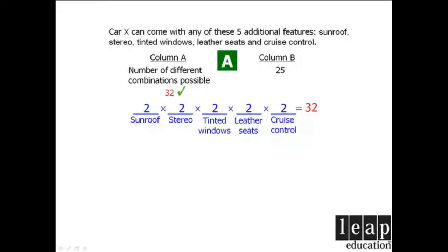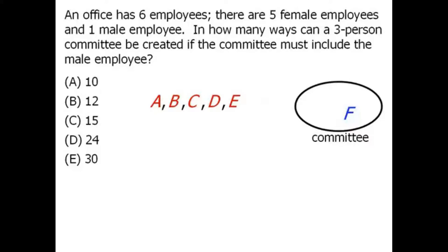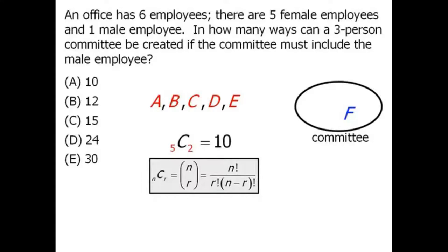We have 5 female employees and 1 male employee, and our goal is to create a 3-person committee such that the male employee must be included. We place the male employee on the committee right away. The question now becomes: in how many ways can we pick 2 more people? Since order doesn't matter, this is a combinations question. We have 5 people to choose from and must pick 2, so this is 5 choose 2, which equals 10. Our answer is A.